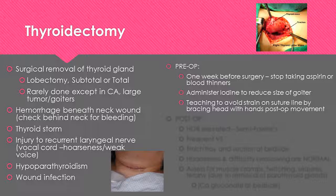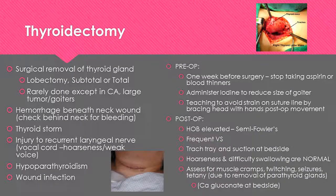For pre-op considerations, the nurse will teach the patient that one week before surgery they need to stop taking aspirin or blood thinners. Iodine will be administered to reduce the size of the goiter prior to surgery. The patient should be taught to brace the head with the hands post-op while moving to avoid strain on the suture line. Post-op, keep the head of the bed elevated to at least semi-Fowler's, monitor vital signs frequently, and ensure a trach tray and suction are at the bedside. The patient will experience hoarseness and difficulty swallowing — reassure them this is normal. Assess for muscle cramps, twitching, seizures, and tetany.